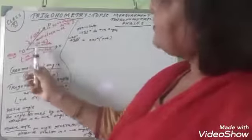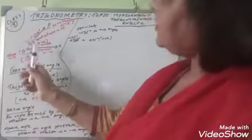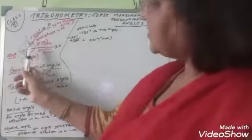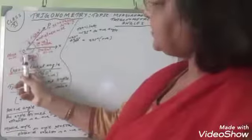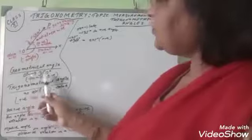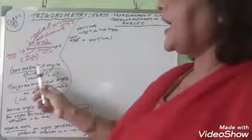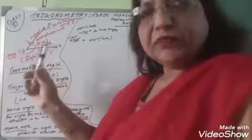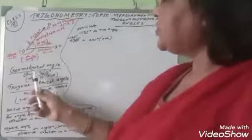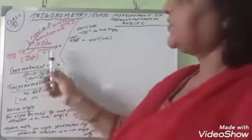This angle we normally measure in the anticlockwise direction. If we start from OX and go anticlockwise, we can go up to 360 degrees. So geometrically, a geometrical angle can be drawn from 0 degrees to 360 degrees.